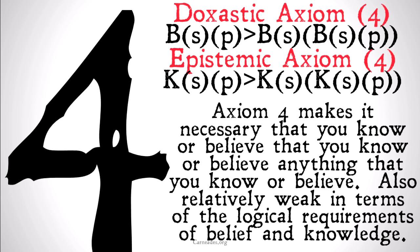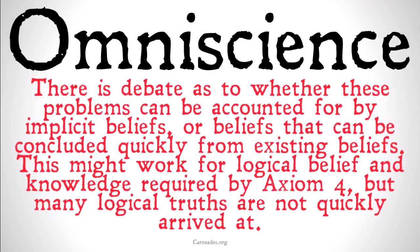Axiom 4 makes it necessary that you know or believe that you know or believe anything that you know or believe. Also relatively weak in terms of logical requirements of belief and knowledge, but if you're worried about things like the KK regress, this is still going to be a problem. There is a debate as to whether these problems can be accounted for by implicit beliefs — beliefs that can be concluded quickly from existing beliefs. While this might work for Axiom 4, since we're just adding 'I know that I know, I know that I know that I know,' and so on, many logical truths seem not very easy to arrive at quickly. Even with Axiom 4, it seems hard to wrap your head around a statement that contains a hundred or two hundred nested 'know that you know' or 'believe that you believe' operators — you aren't really able to understand what it means.